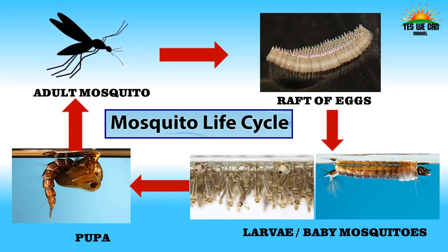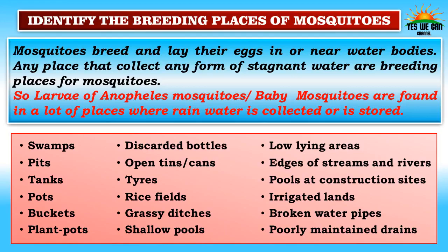The mosquito goes through four stages: egg, larva, pupa, and adult. The first preventive measure is to identify the breeding places of mosquitoes — places suitable for their growth and development. Mosquitoes breed in or near water bodies with stagnant water. Larvae are found in swamps, pits, tanks, pots, buckets, plant pots, discarded bottles, open tins, lorry tires, rice fields, grass ditches, shallow pools, low-lying areas, edges of streams, construction site pools, irrigated lands, and broken or poorly maintained water pipes and drains.